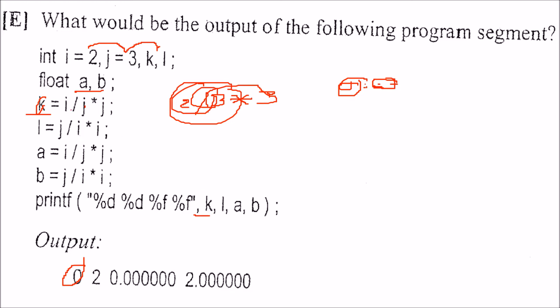Next, we have l is equal to j by i into i. That means, that you will have j as 3 by i into i, that is 2 into 2. See this l is again an integer, l is an integer, so what you will get, 3 by 2, 3 by 2 is 1.5. But, because this is, these two are integers, you will get only 1. 0.5 will be discarded, 1 into 2 is 2, so you will get 2 here. If you print l, you will get 2.